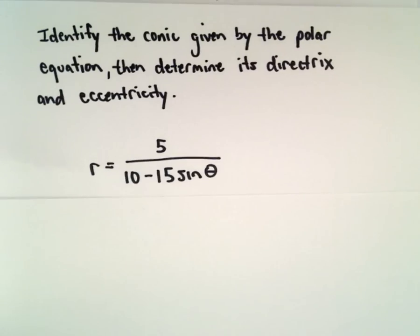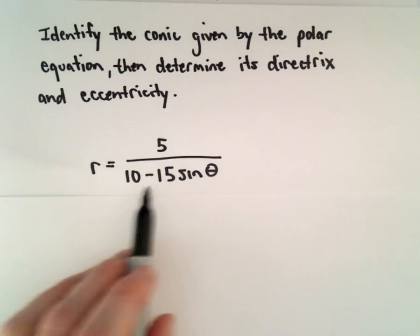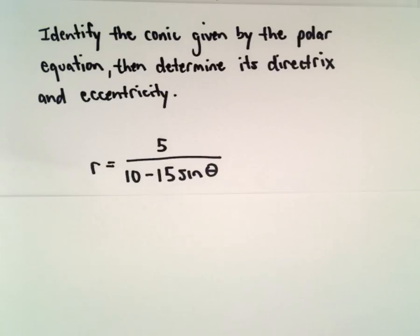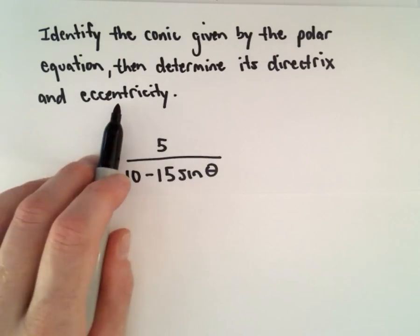Okay, here we're going to identify the conic that's given by the polar equation r equals 5 divided by 10 minus 15 times sine theta.